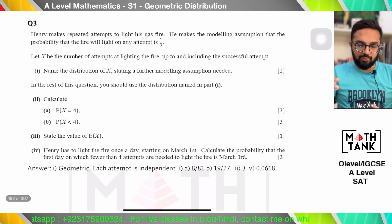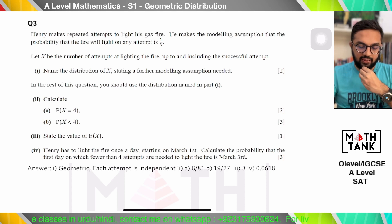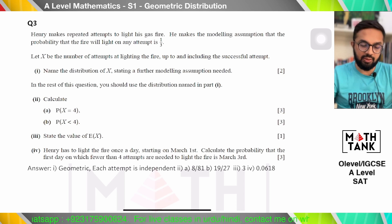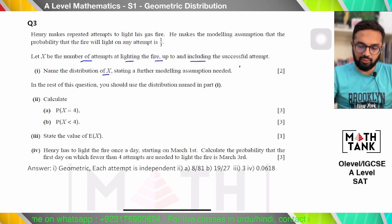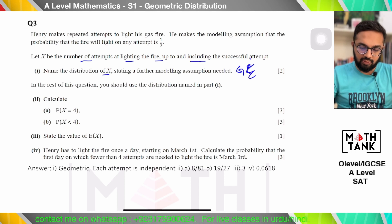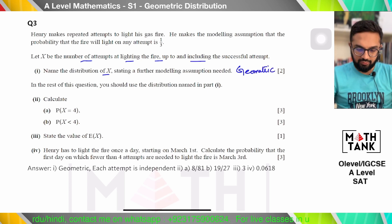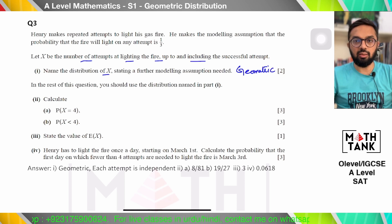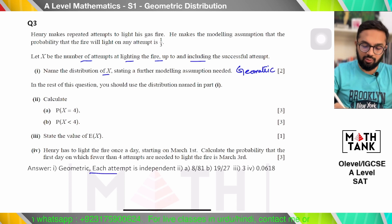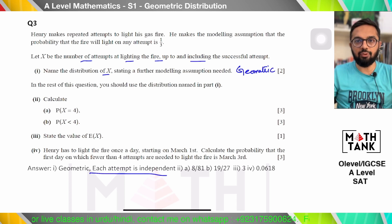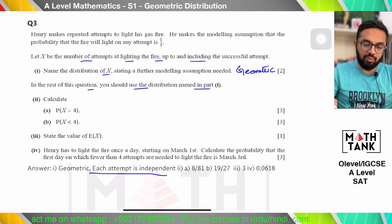Those are easy questions. Moving on to question 3. Henry makes repeated attempts to light his gas fire. He assumes the probability that the fire will light on any attempt is 1/3. Let X be the number of attempts up to and including the first successful attempt. Name the distribution — it's a geometric distribution. The key assumptions are: the probability of success at each attempt is the same, and each attempt is independent with constant probability throughout.